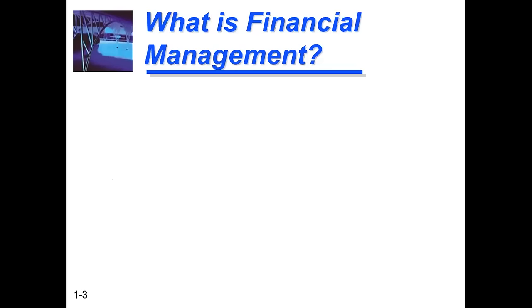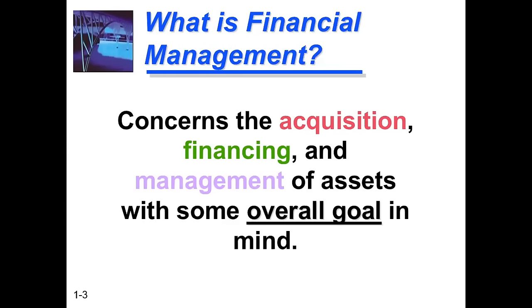Financial management is basically concerned with three things: first, the acquisition of assets — what assets we need to acquire for the firm; second, the financing of those assets — where will the financing come from? Whether we take on debt, use retained profits from previous years, or issue shares. These are the main possibilities as a resource to get financing for a firm.